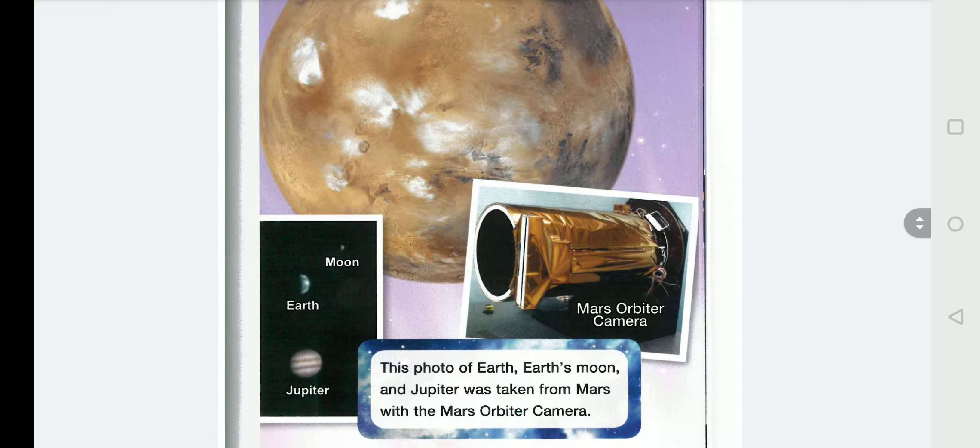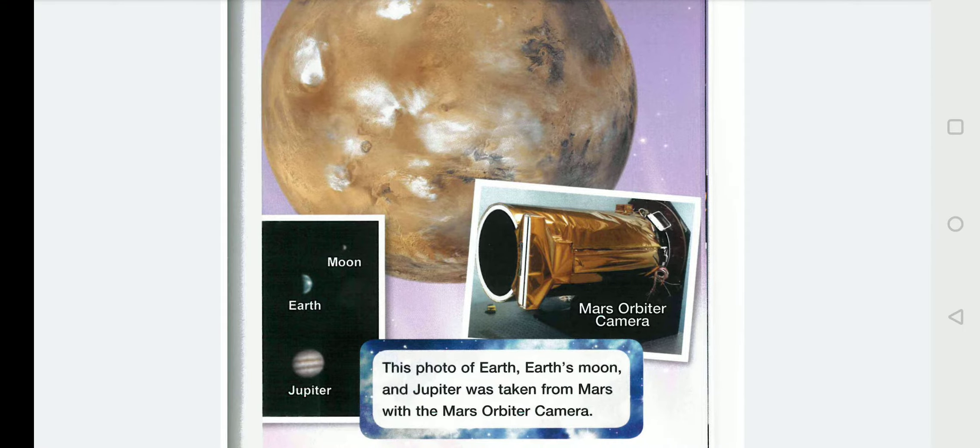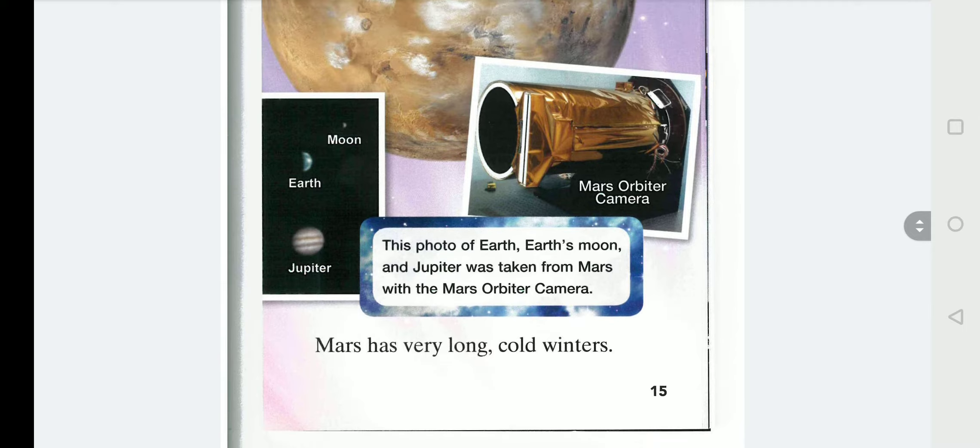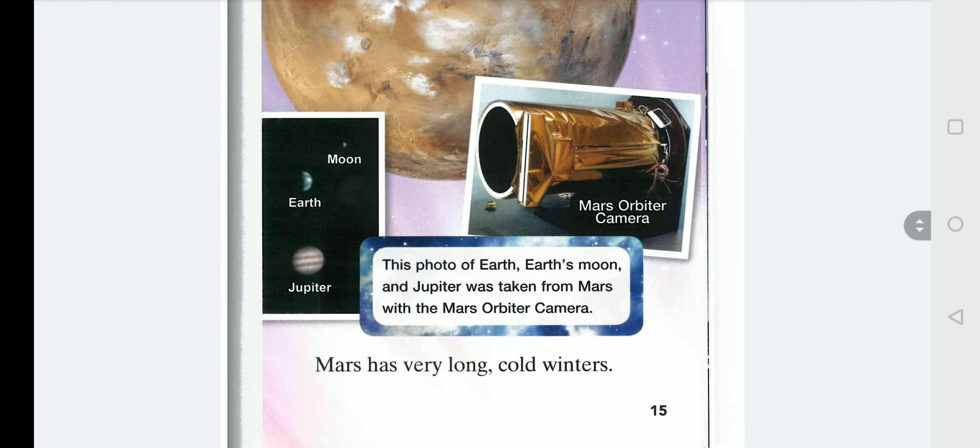Mars. This photo of Earth, Earth's moon and Jupiter was taken from Mars with the Mars orbiter camera. Mars has very long cold winters.